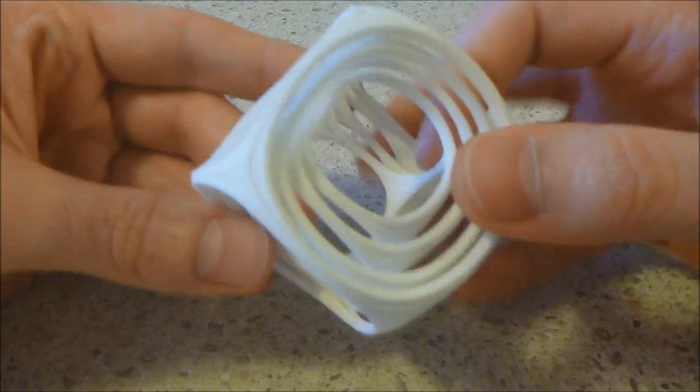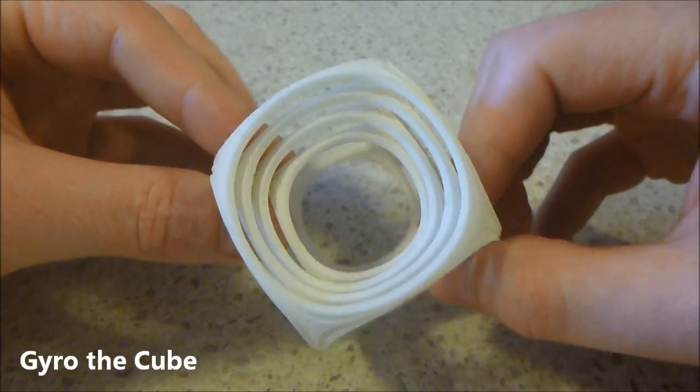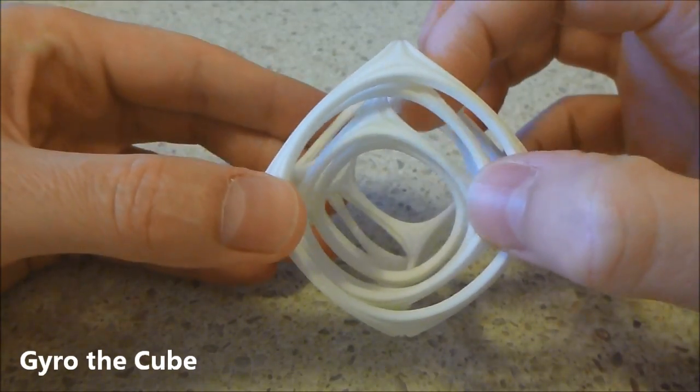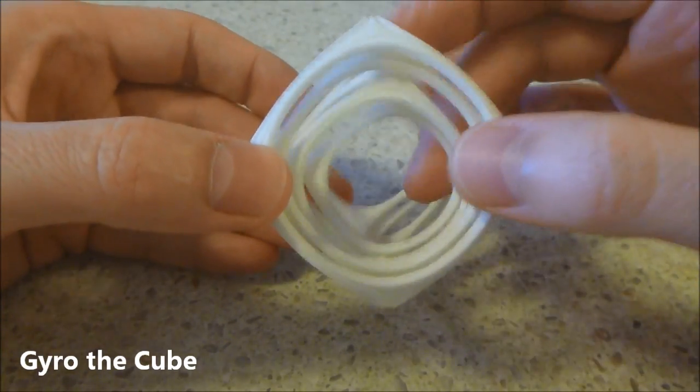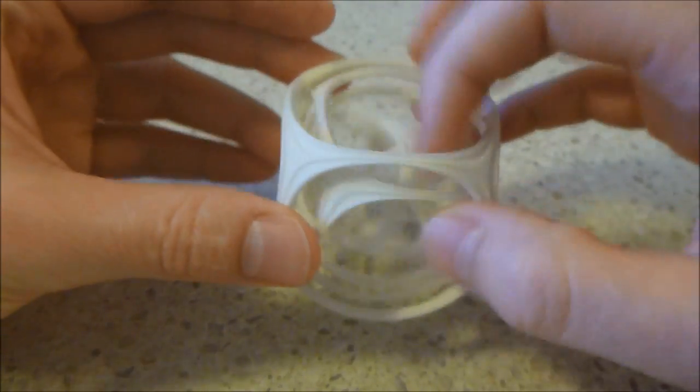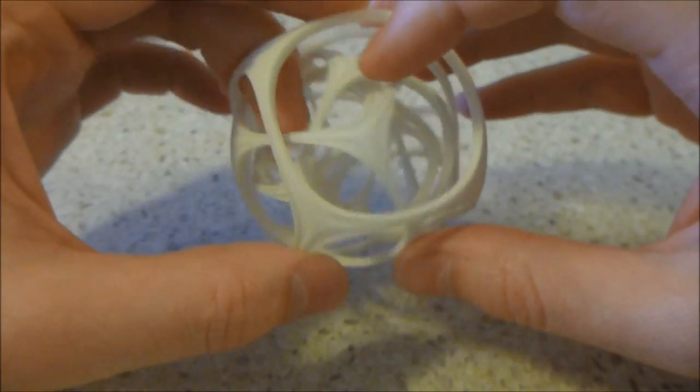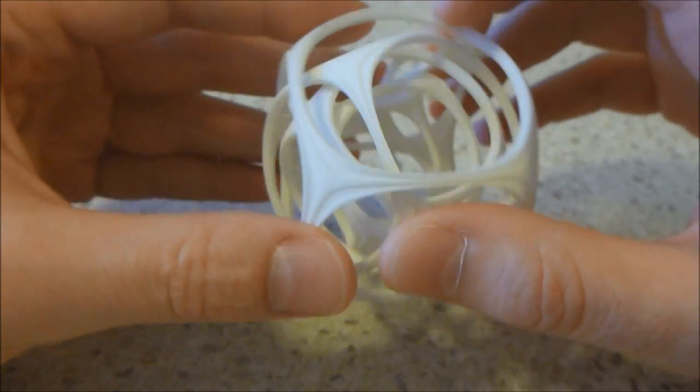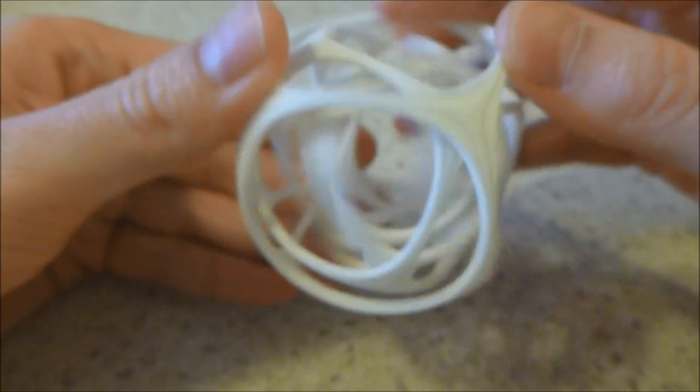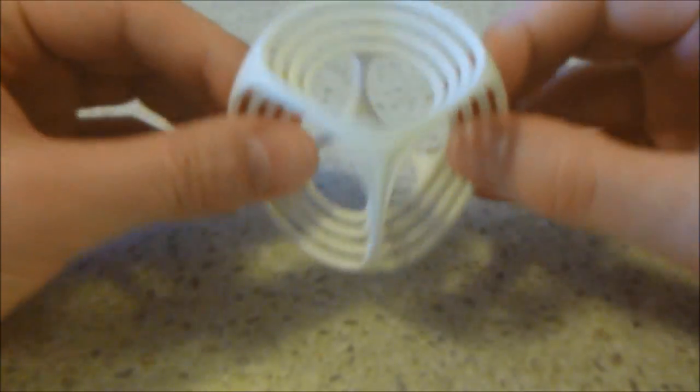This interesting object called Gyro the Cube, four cubes nested inside one another, each of which you can rotate independently, so you can play with that for quite a while. These were 3D printed separately and then assembled, but they can all rotate independently of one another.